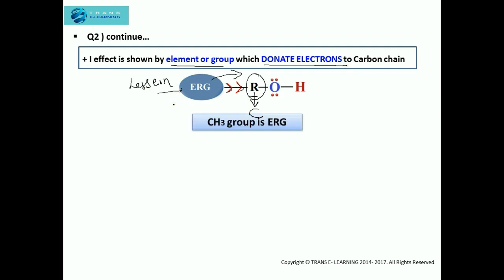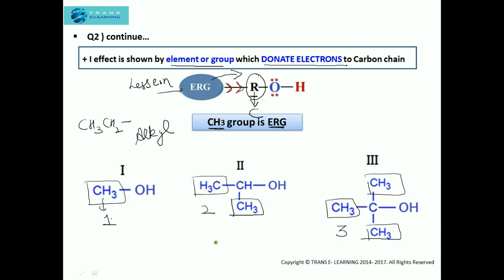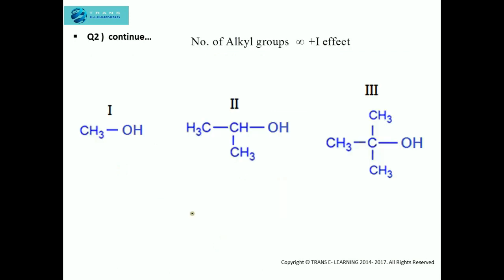Taking alkyl groups into consideration, all alkyl groups — whether methyl, ethyl, propyl, or any other — are electron-releasing in nature. The three structures given in the question have different numbers of alkyl groups: methanol has just one alkyl group, propane-2-ol has two alkyl groups, and 2-methylpropane-2-ol has three alkyl groups. The inductive effect is directly proportional to the number of alkyl groups present.